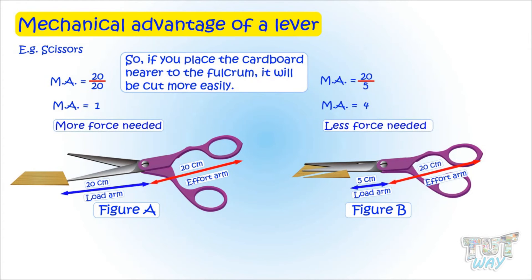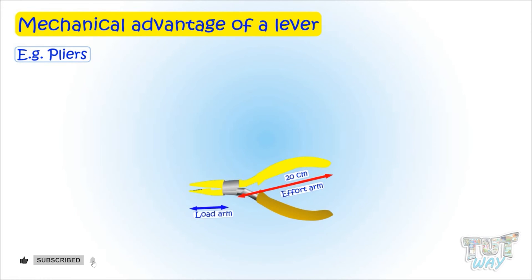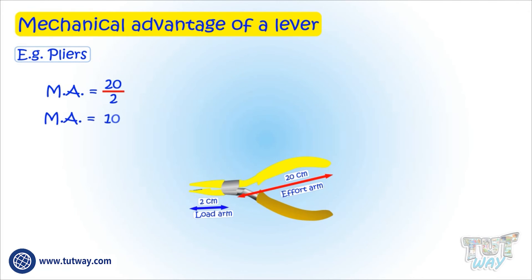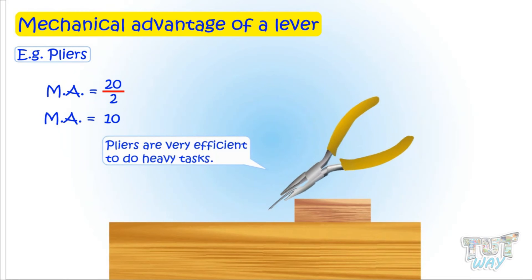Another example is pliers. The effort arm is 20 centimeters, whereas the load arm is much, much smaller — only 2 centimeters. So the mechanical advantage is 20 divided by 2, which is 10. An MA of 10 means the applied force will be multiplied by 10, and this is the reason pliers are able to do tough jobs.